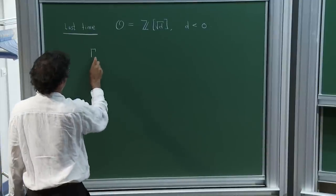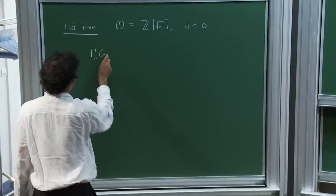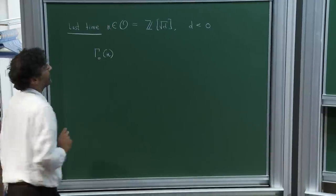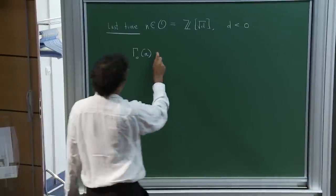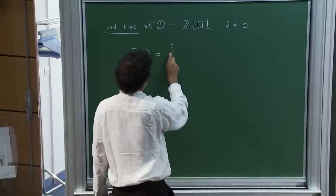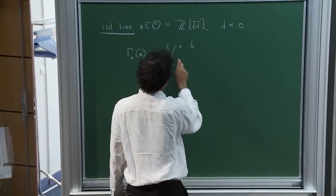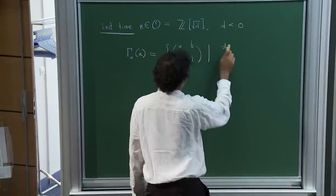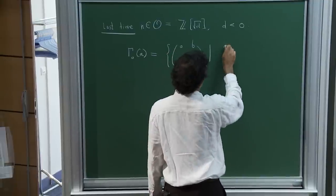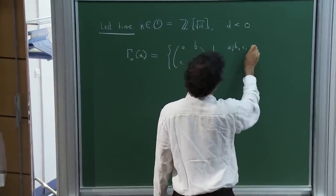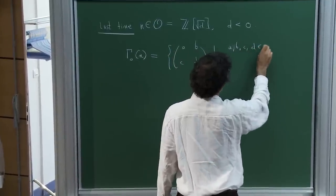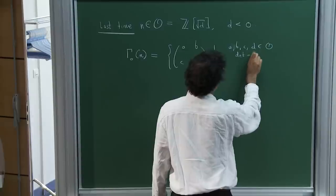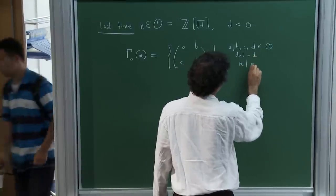N is an element of this order. We define the congruent subgroup with entries A, B, C, D belonging to O, where the determinant is 1 and N divides C.